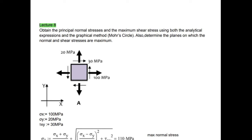Welcome to lecture 8 of the Mechanics of Materials course. In this lecture we will see a question on principal stress and strain and also Mohr's circle. The question is: obtain the principal normal stress and maximum shear stress using analytical expression and graphical method, that is Mohr's circle, and also determine the plane on which normal and shear stress are maximum.